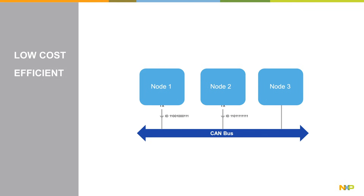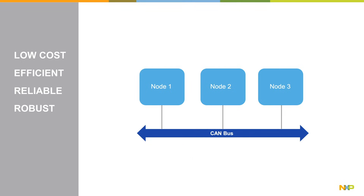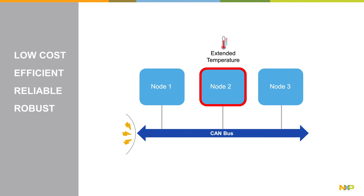And speaking of corruption, CAN is reliable. The CAN specification contains five methods of error checking, making it extremely reliable for applications where failure is not an option. CAN is also robust. Its high-speed data lines are resistant to electrical disturbances. Some CAN controllers and receivers also come in extended temperature ranges or fault-resistant varieties for the most demanding environments.